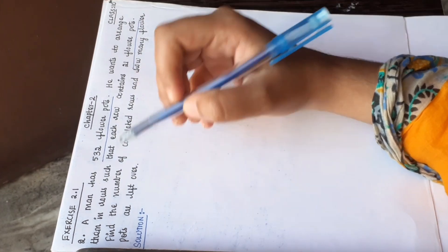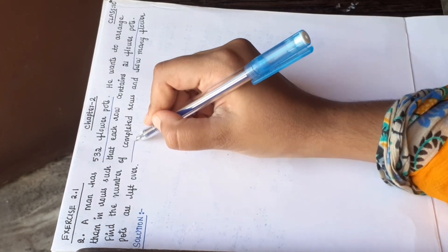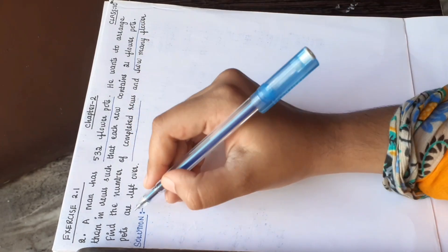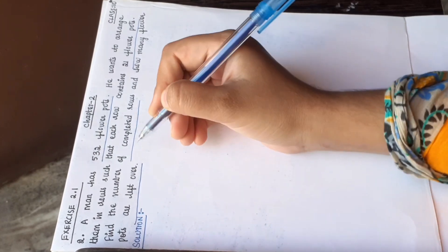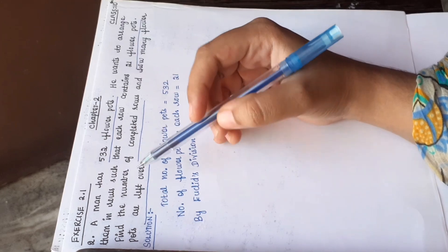Find the number of completed rows and how many flowerpots are left over, the remaining leftover flowerpots from the question.